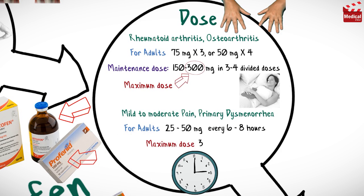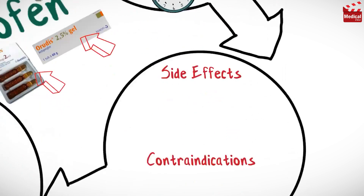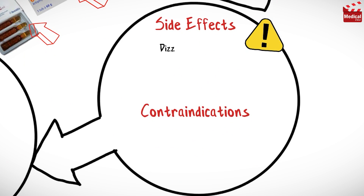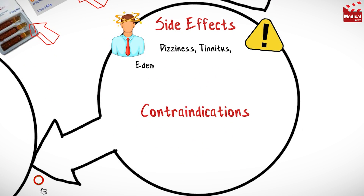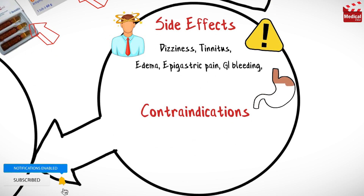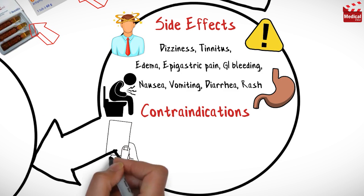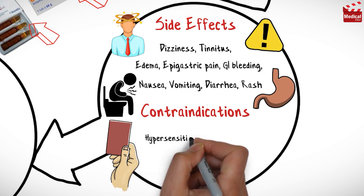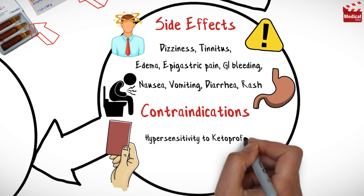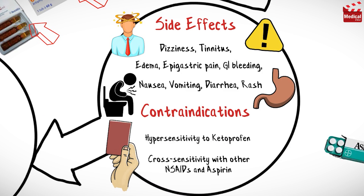The maximum dose is also 300 milligrams per day. Ketoprofen may cause dizziness, tinnitus, edema, epigastric pain, gastrointestinal bleeding, nausea, vomiting, diarrhea, and rash.